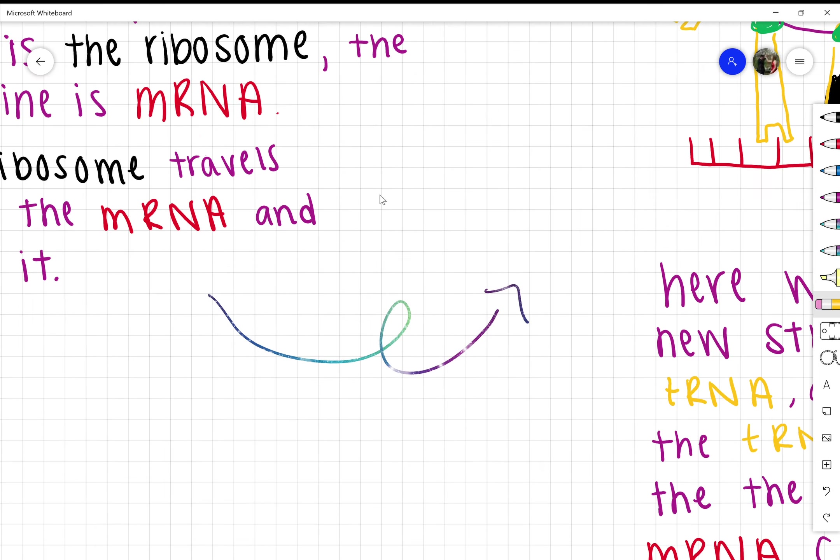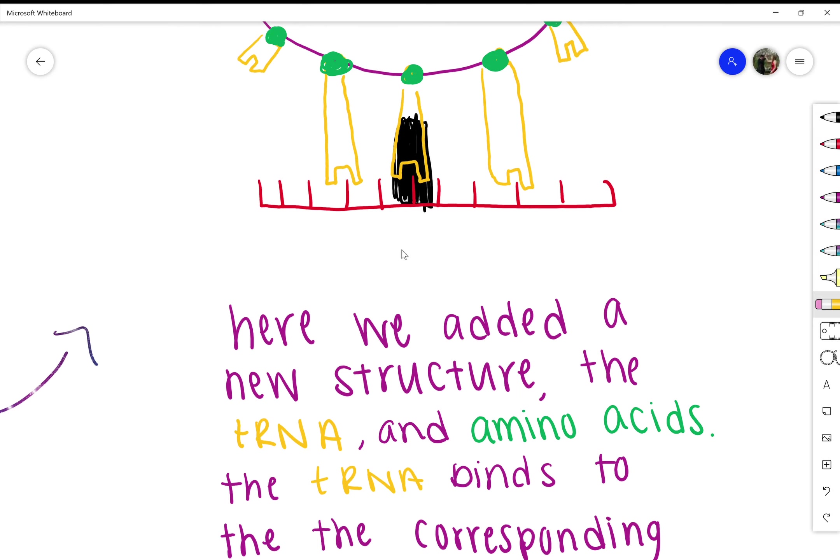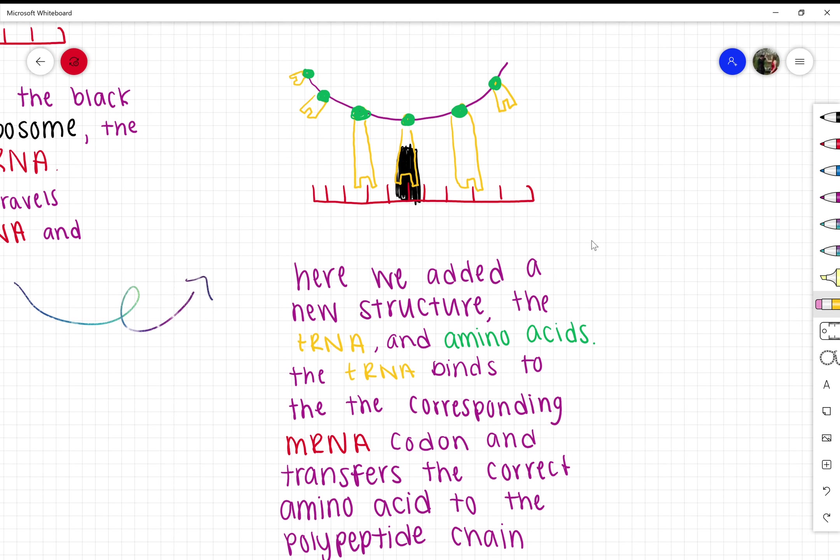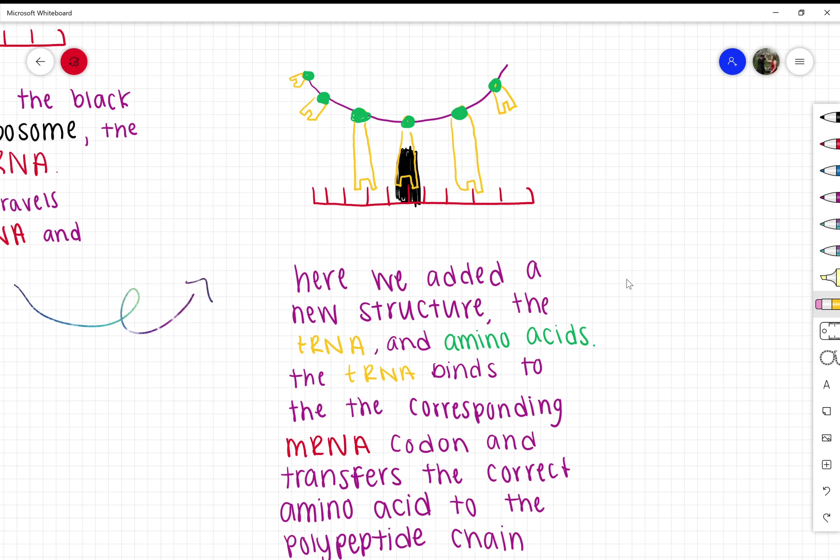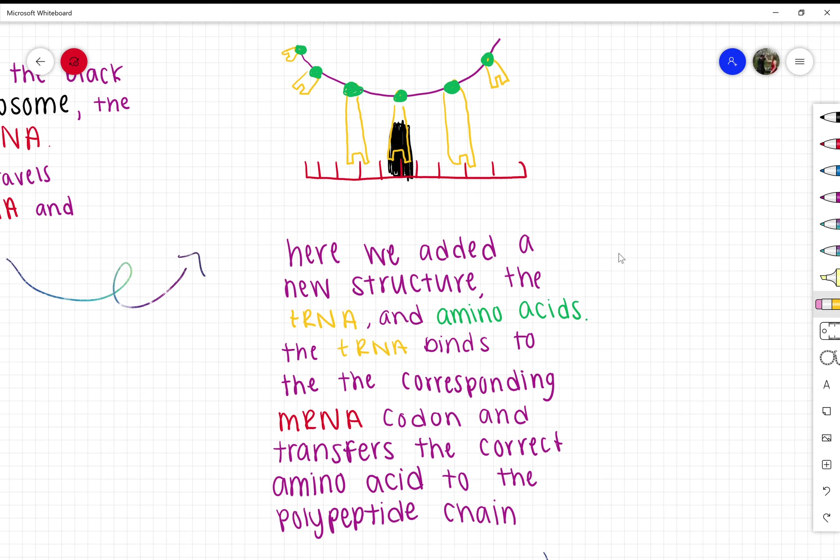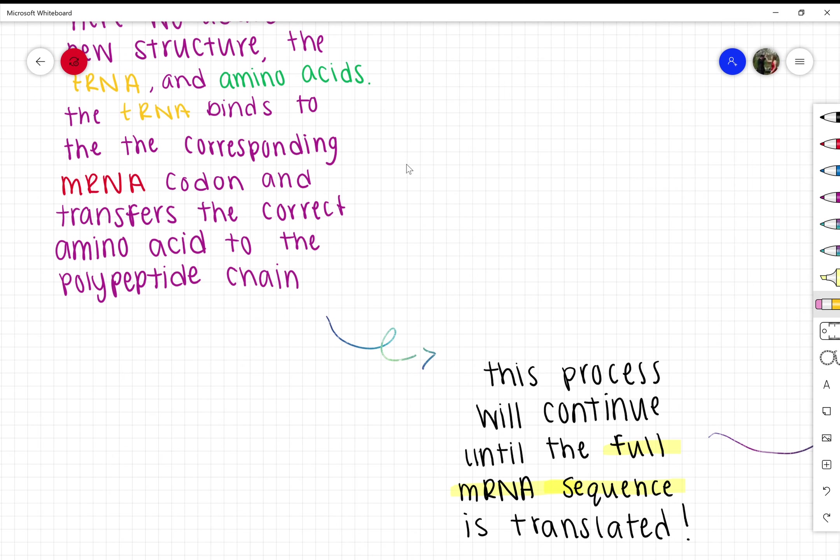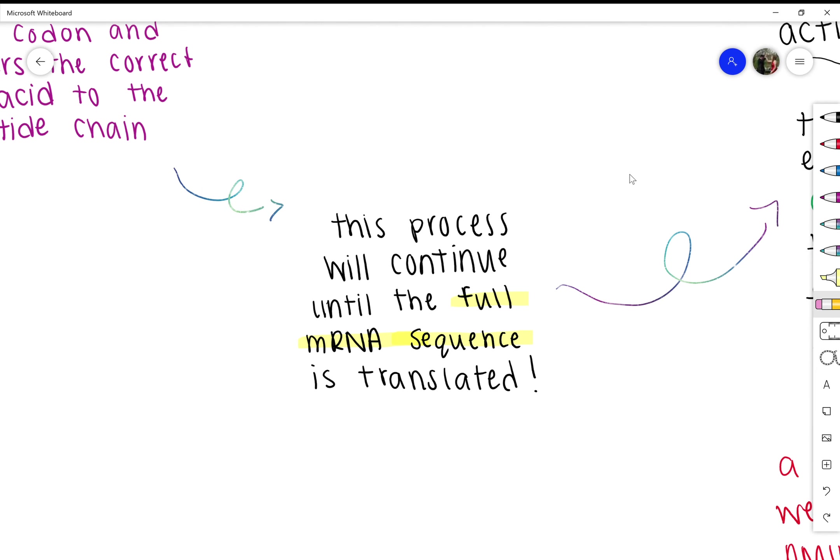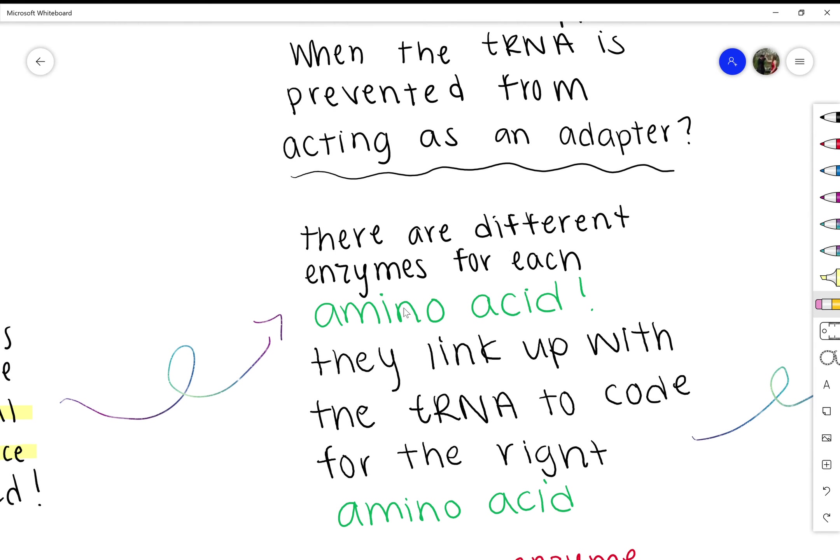Here we've added a new structure: the tRNA, which is shown in yellow, and amino acids, which are shown as green dots. The tRNA binds to the corresponding mRNA codon and transfers the correct amino acid to the polypeptide chain. This process continues until the full mRNA sequence is translated.